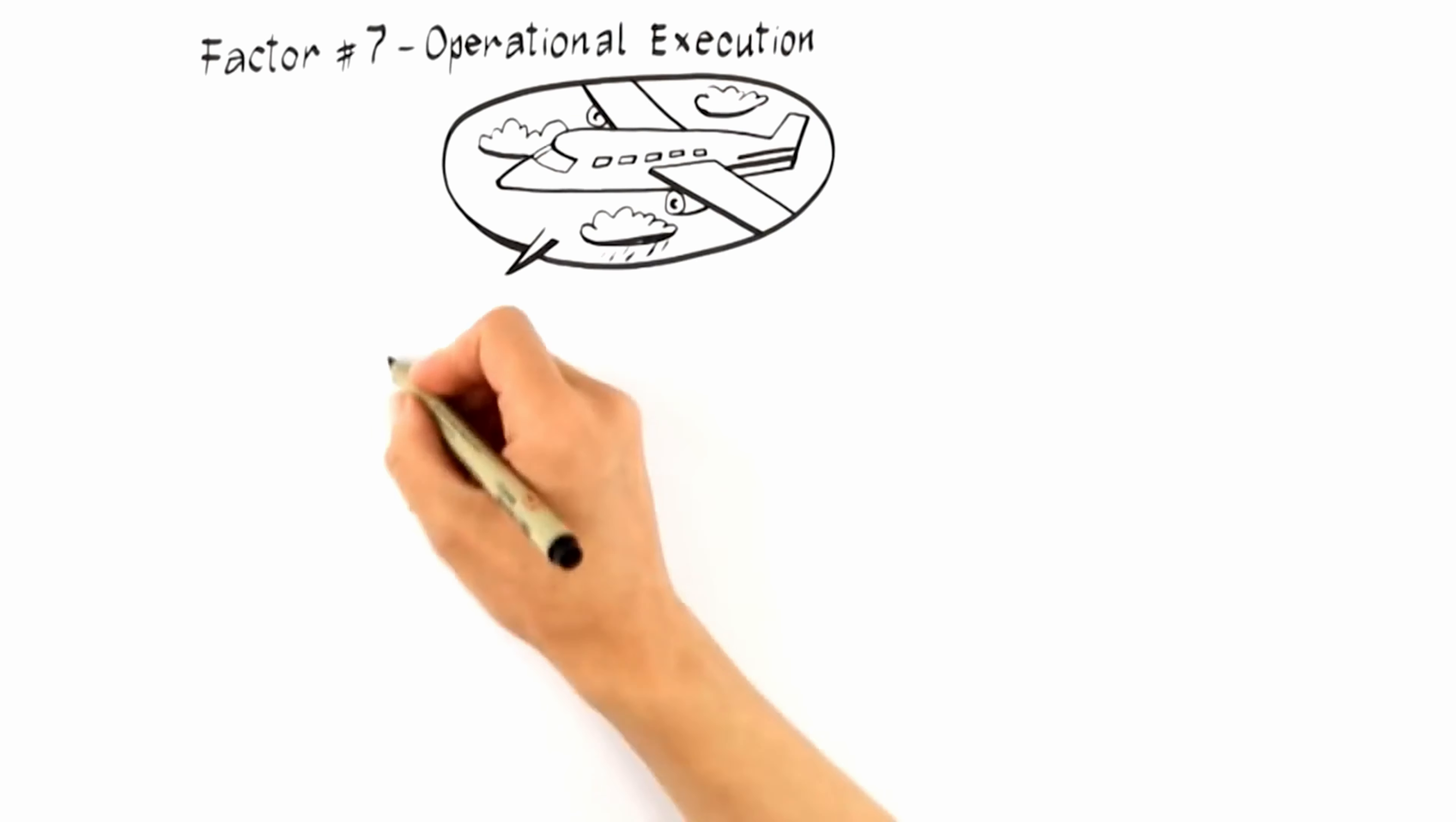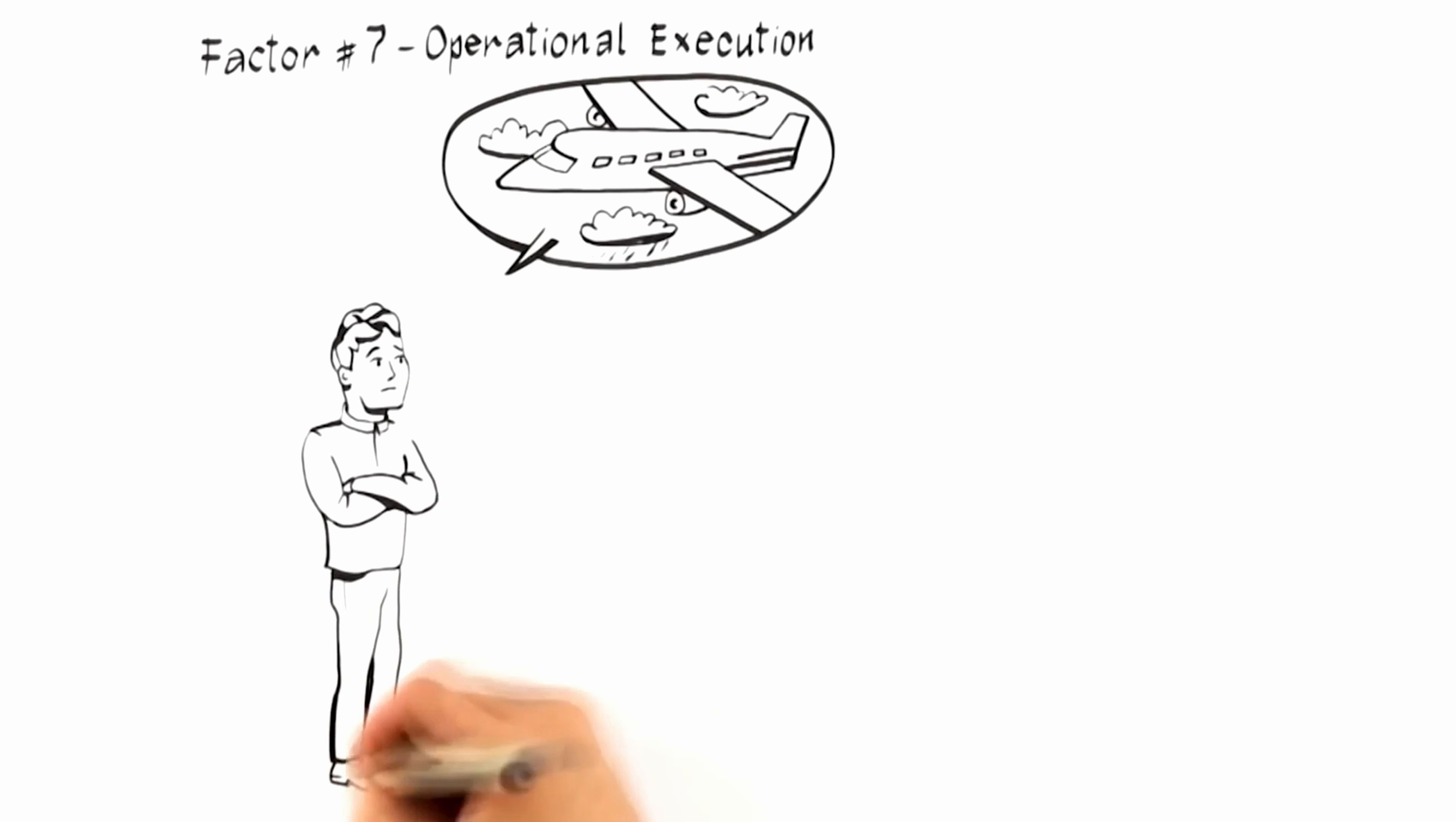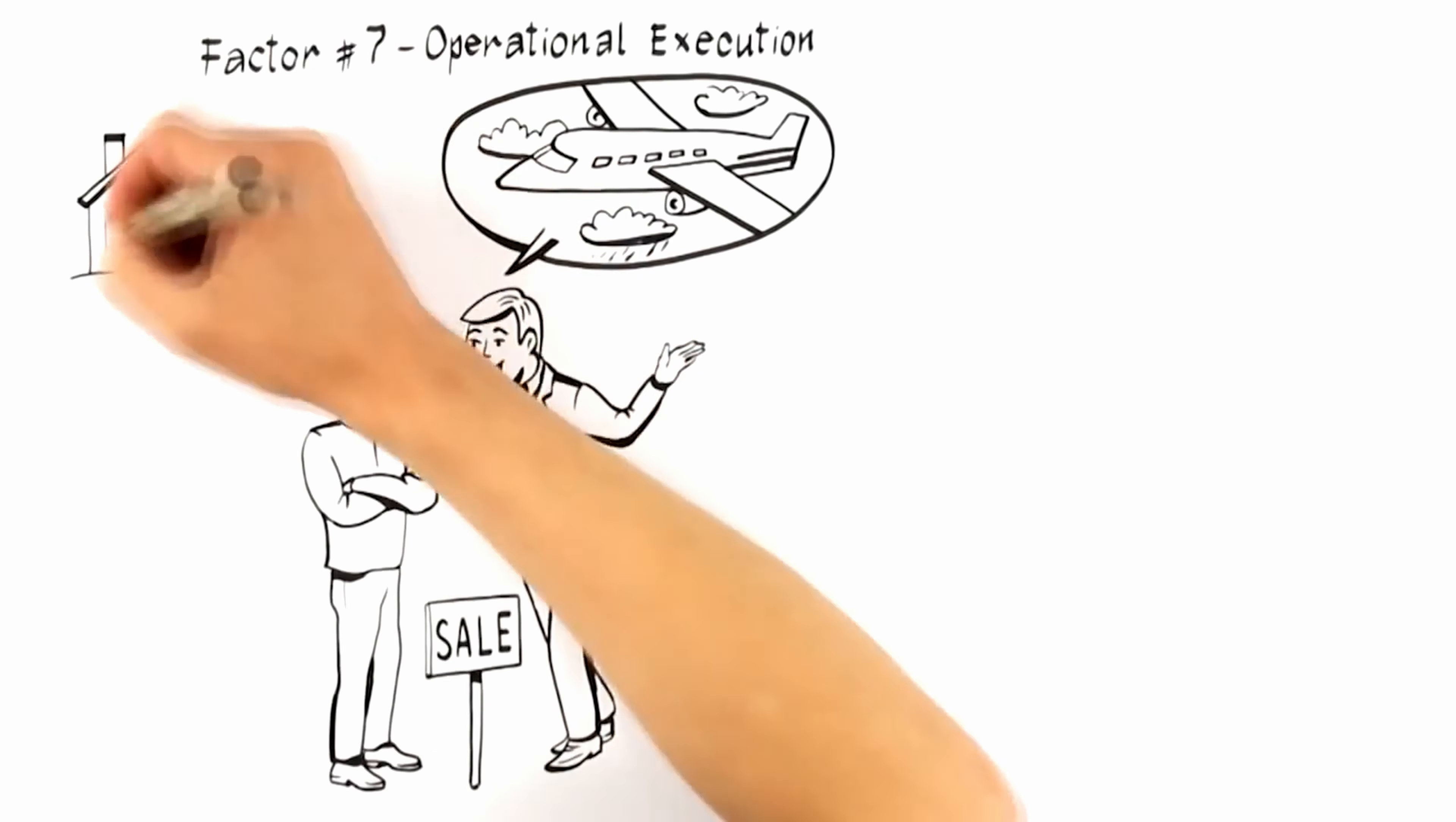The last factor that brings everything together is factor number seven: operational execution. The sale of your home is much like flying in an airplane. You want an expert in the cockpit who's flown hundreds of times and follows a set of documented processes to get your plane safely into the air and back on the ground again.